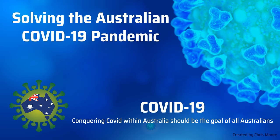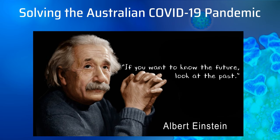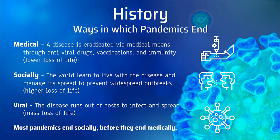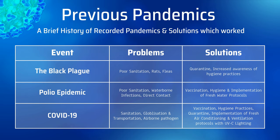Eliminating this pandemic within Australia should be the goal of all Australians. These are the three ways which most pandemics end. Most pandemics end socially well before they end medically. By studying previous pandemics we can build on and improve our society as a whole to enhance the health of everyone.